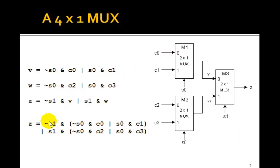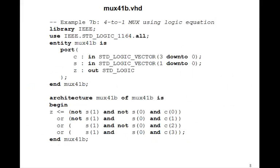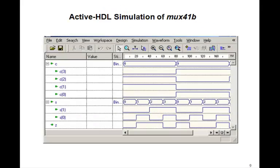That's how we did it using port maps. We could, of course, expand this as a logic equation like we did in lesson 17. We could write a VHDL program with the same c3 down to c0, the same s1 down to s0, and same output z, but just write the logic equation: z equals (not s1 and not s0 and c0) or (not s1 and s0 and c1) or (s1 and not s0 and c2) or (s1 and s0 and c3). That would produce the same simulation waveforms. So it works in either case.